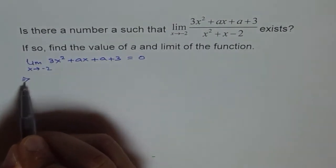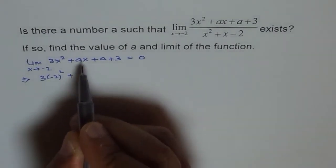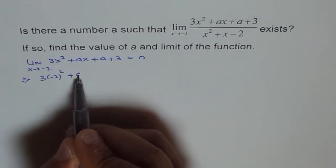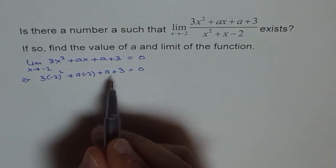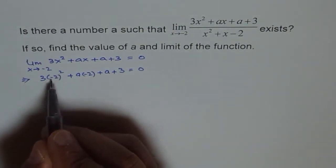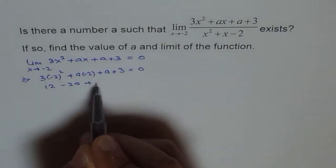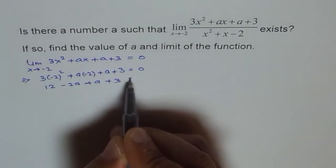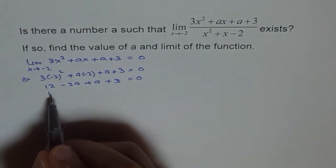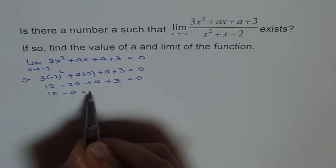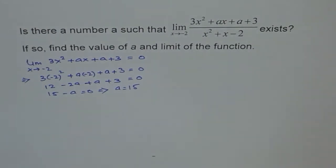Plugging in minus 2, we get 3 times (minus 2)² plus a times (minus 2) plus a plus 3 equals 0. Minus 2 squared is 4 and 4 times 3 is 12, so we get 12 minus 2a plus a plus 3 equals 0. Minus 2a plus a is minus a, so we get 15 minus a equals 0, which implies a equals 15.